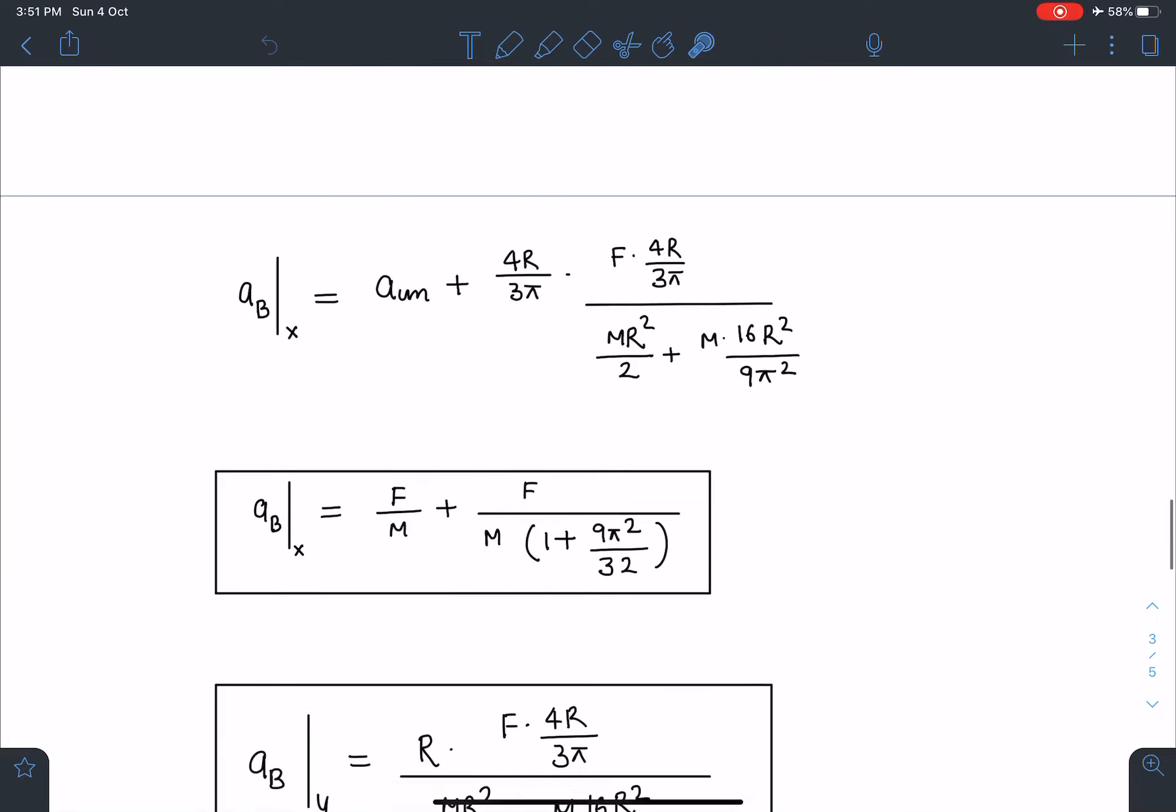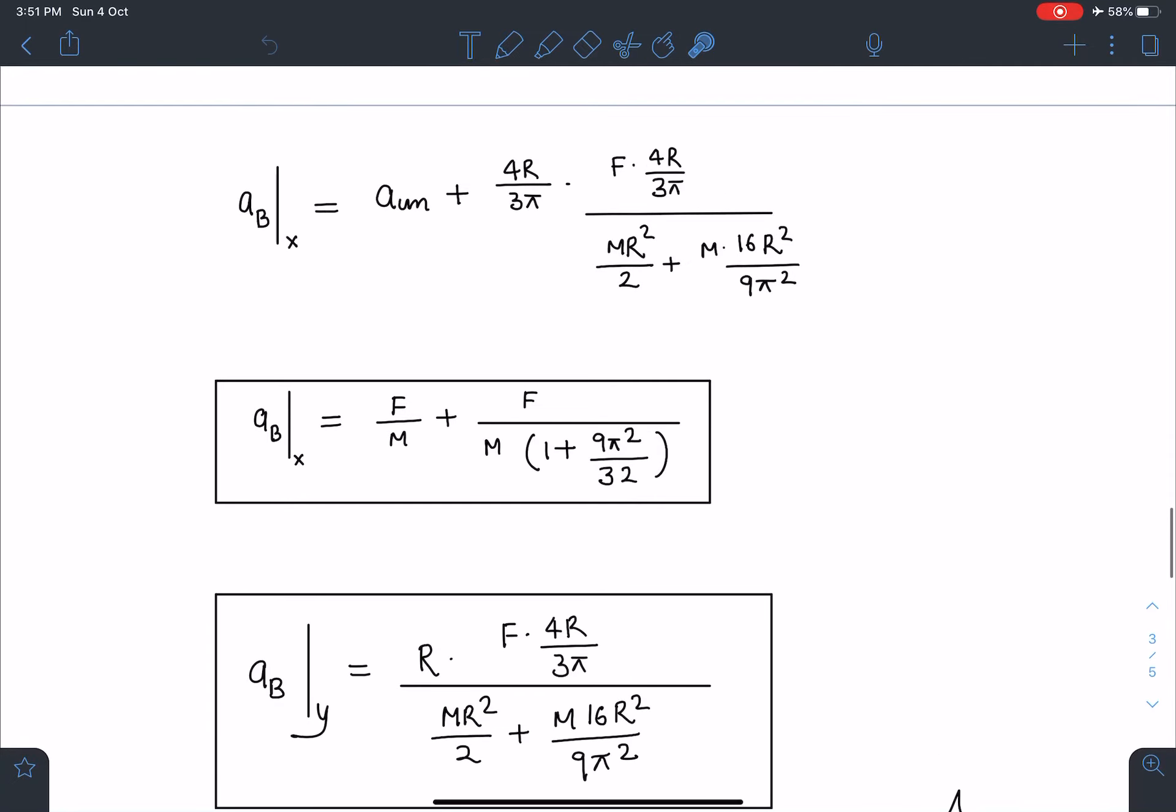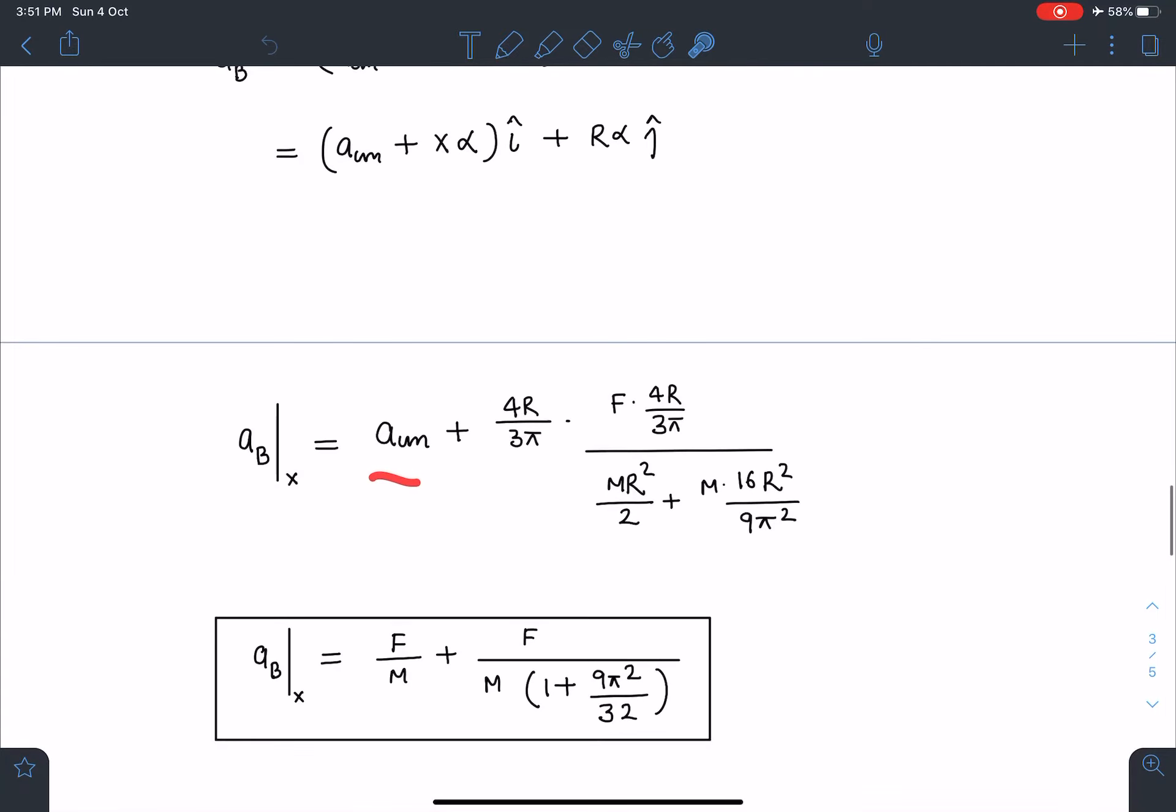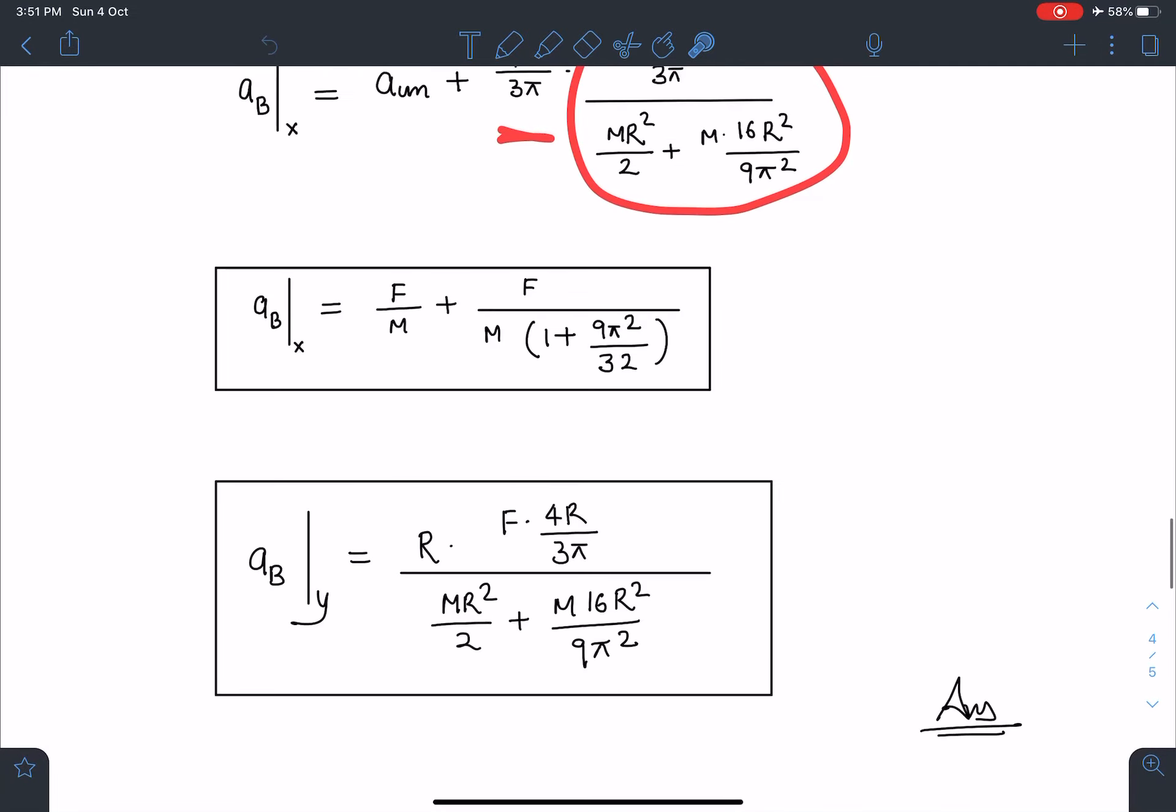Now if I substitute the values here, acm plus x alpha, so x is 4R by 3π. Alpha value which we have calculated here in the previous equation we can substitute, and if you simplify a bit we are going to get this. I am not doing the full calculation for this, and also I am not doing the numerical part.